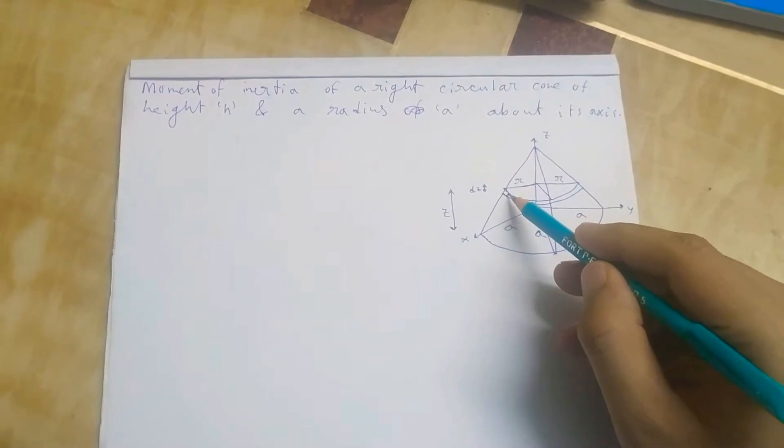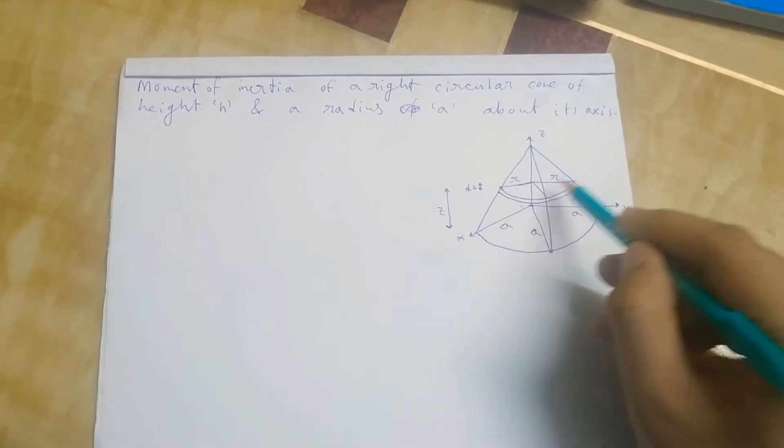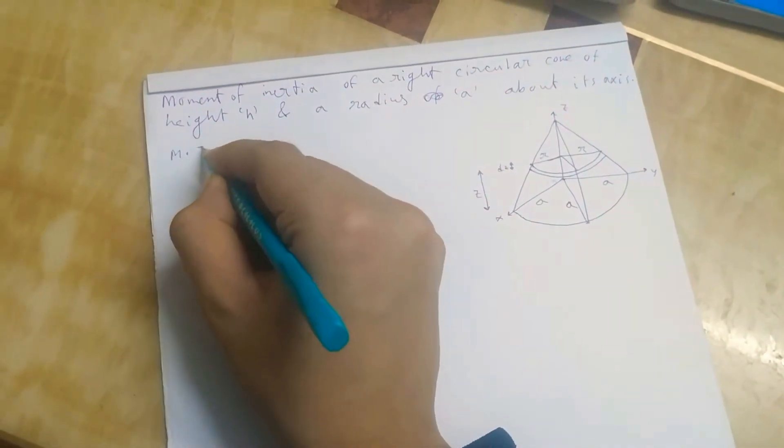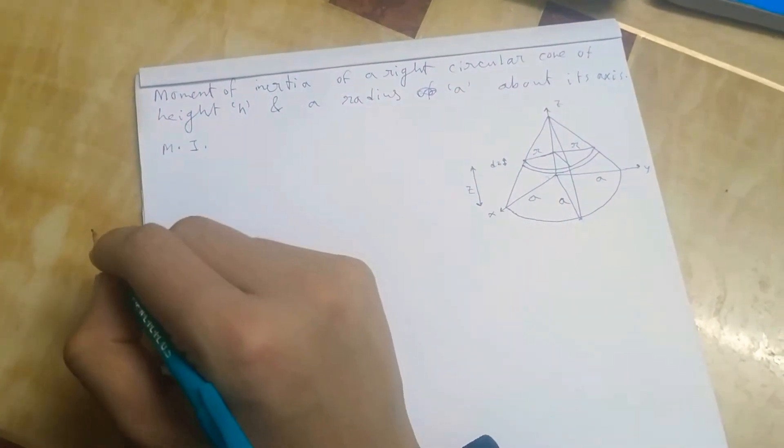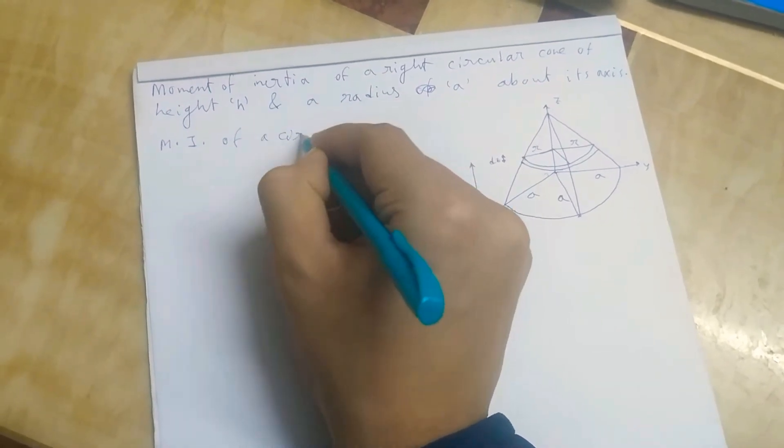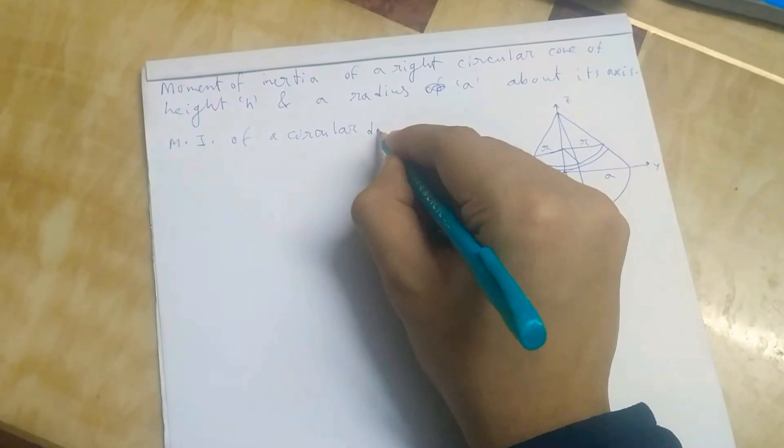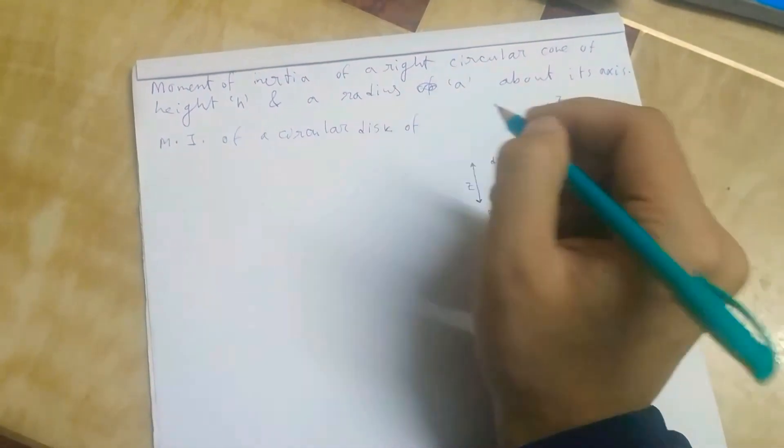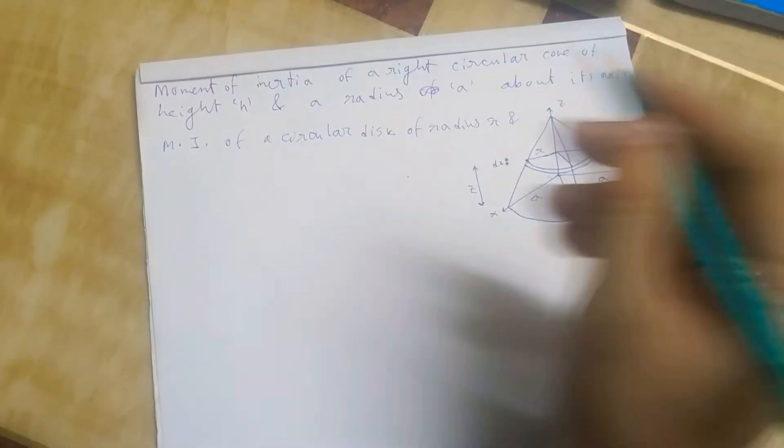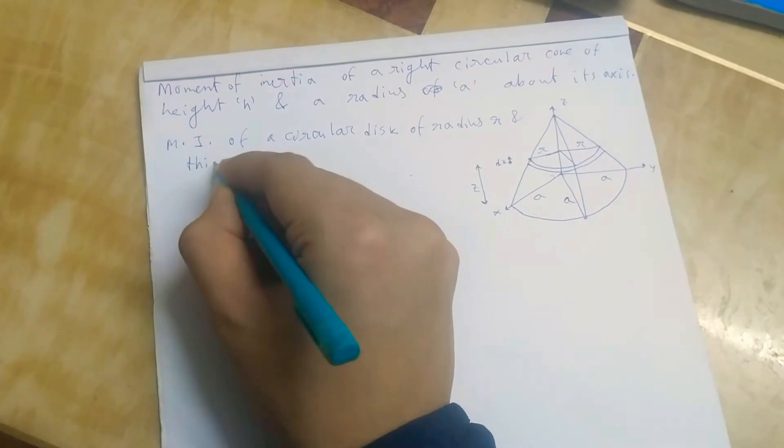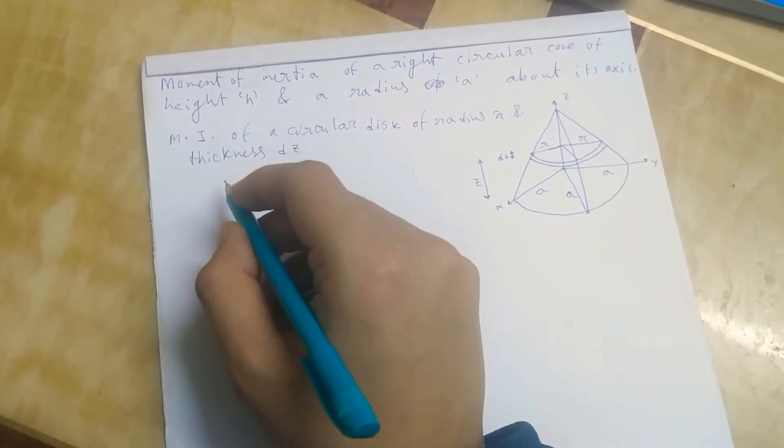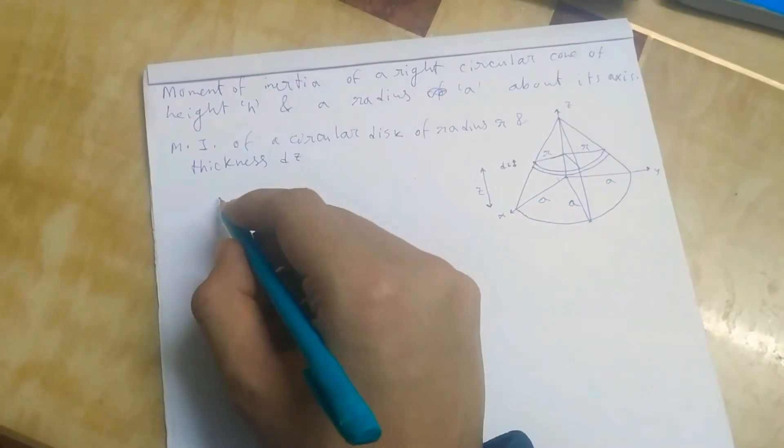Here, I have taken at a z distance from base, I have taken a thin disk of breadth dz and radius r. So we can write that moment of inertia of a circular disk of radius r and thickness dz, it will be, we know that, and it will be equal to half dm r squared.